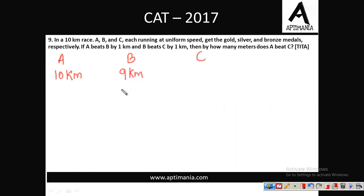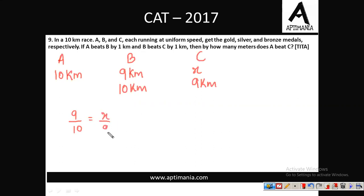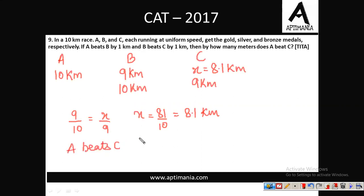B beats C by 1 km — when B completed the race of 10 km, C was 1 km away from the finish line, meaning C completed 9 km. Since the ratio of distances travelled remains the same, we set 9/10 = X/9. Cross-multiplying gives X = 81/10 = 8.1 km. So when A completed 10 km, C completed 8.1 km, meaning A beats C by 10 − 8.1 = 1.9 km.